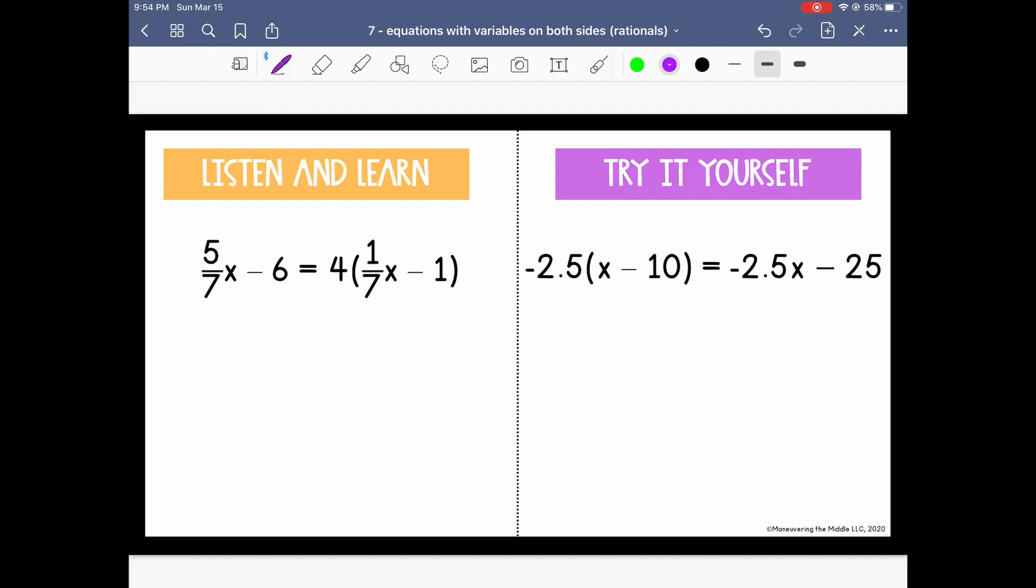Let's do a couple more. On this example, we need to start by distributing this 4 to both terms inside of parentheses. So I'm going to rewrite the left side, and then when I distribute the 4, I get 4/7 x minus 4. I'm going to collect my variables on the left, since 5/7 is larger than 4/7. So I'm going to cancel this term by subtracting 4/7 x. So that will cancel, 5/7 minus 4/7 leaves me with 1/7 x minus 6 equals -4.